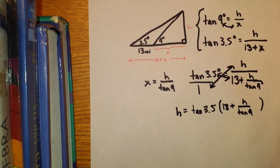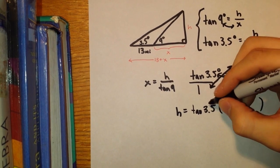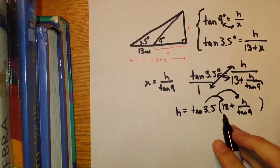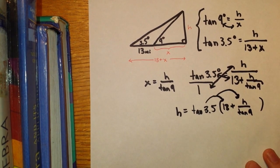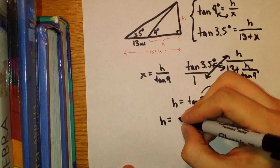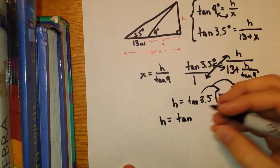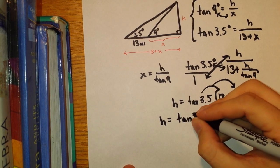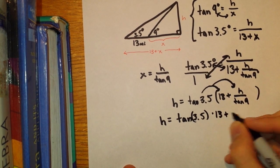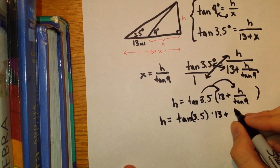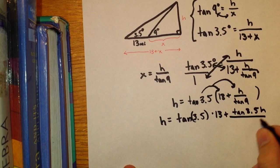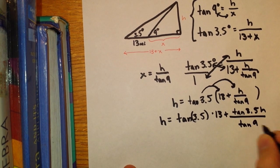I'm going to use the distributive property here, and distribute this tangent of 3.5 times 13, plus tangent of 3.5H over tangent of 9.